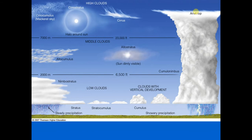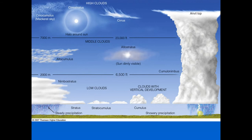Thunderstorm hazards include hail (which can cause significant damage), heavy rain (which can cause flooding), and lightning (which can start fires). Cumulonimbus clouds produce showery rainfall because, even though they can be incredibly tall, they are not very wide and will pass much faster than nimbostratus. Cumulonimbus clouds also move faster than nimbostratus, which is why you get heavy but short-duration showery precipitation.